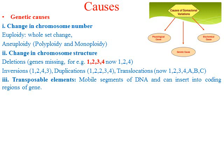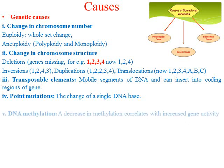The next genetic cause is point mutation — the change of a single DNA base. If this DNA base change is within the coding region, it leads to alteration of the amino acid sequence, and ultimately you will have a different protein. This also leads to somaclonal variation.